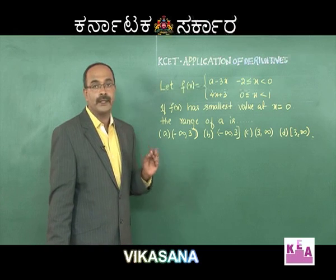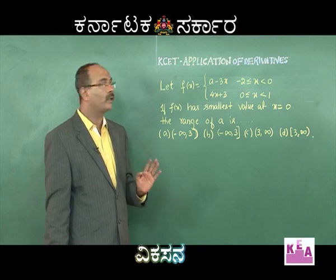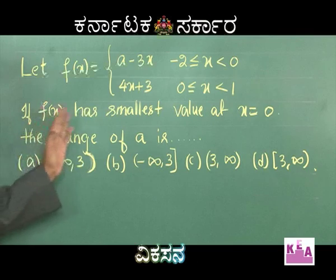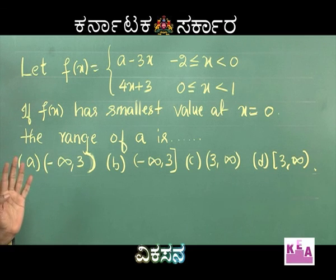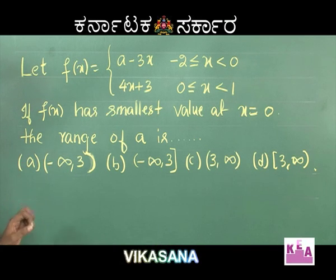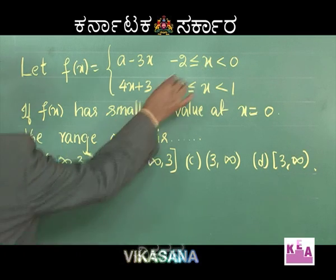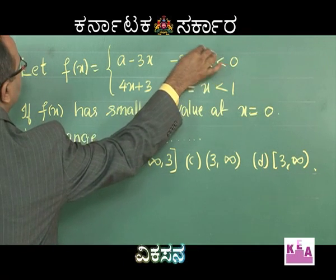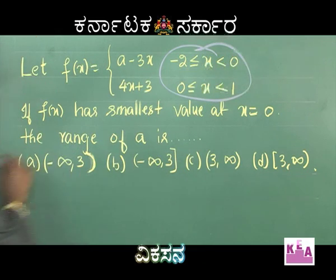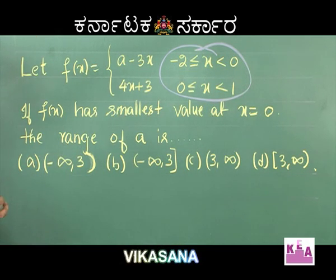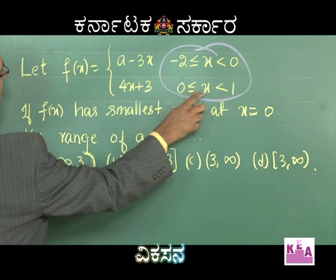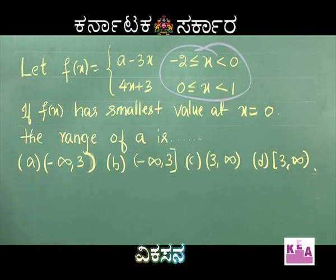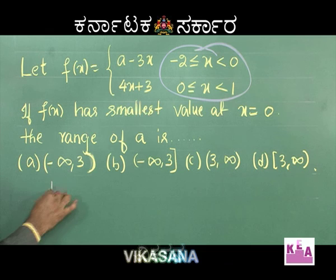Definitely the curve is continuous, no doubt, because they have given smallest value at x = 0. At x = 0 the function has the smallest value — you have to concentrate on this particular part. For −2 ≤ x < 0 and 0 ≤ x < 1, what is f(0⁻)?